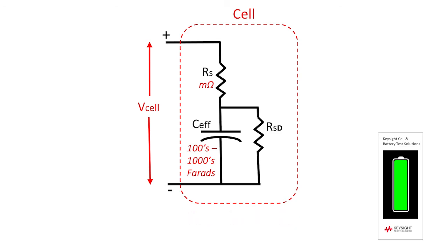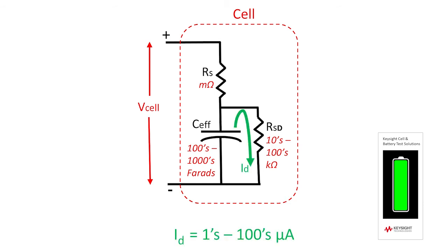The self-discharge can be modeled as a parallel resistance, R-sub-Sd, through which the self-discharge current flows. This self-discharge resistance is typically in the range of tens or hundreds of kilo-ohms. When nothing is connected to the cell — an open circuit condition — C-effective discharges through the high-value R-sub-Sd, generating a current, I-sub-D, that can range between a few micro-amps to a few hundred micro-amps — the self-discharge current.